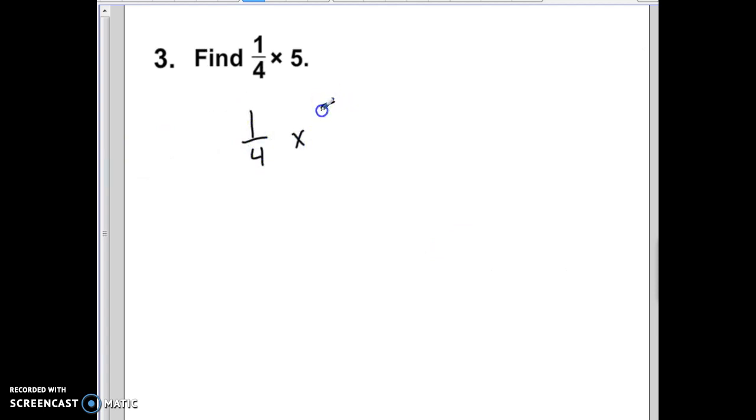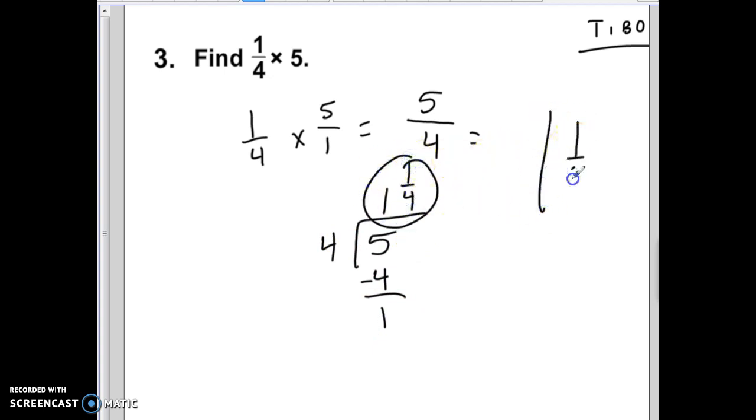1 fourth times 5 is the same as 1 fourth times 5 over 1. 1 times 5 is 5. 4 times 1 is 4. And at this point, we can simplify by doing Tebow. Top in, bottom out. 4 goes into 5 once. And 5 minus 4 is 1. So, it looks like our answer is 1 and 1 quarter.